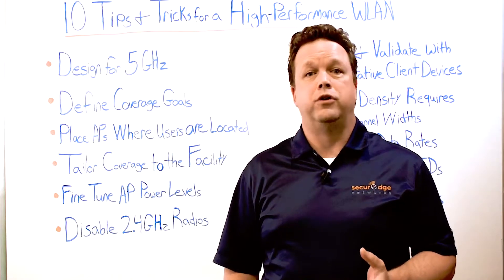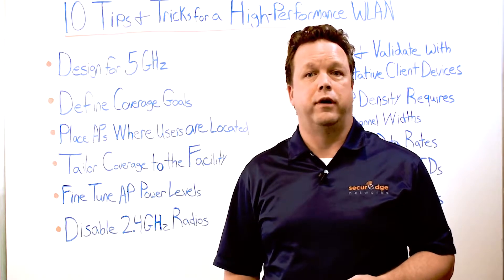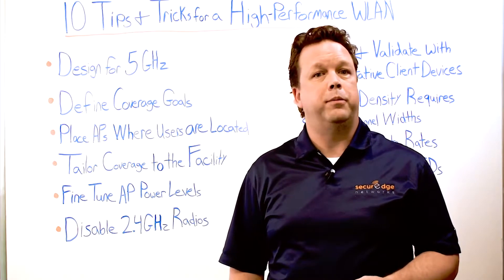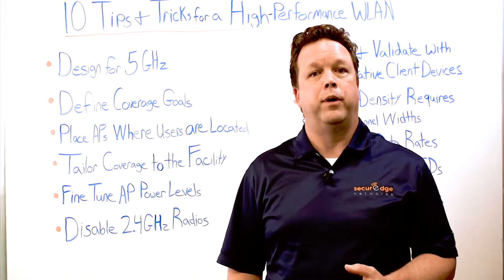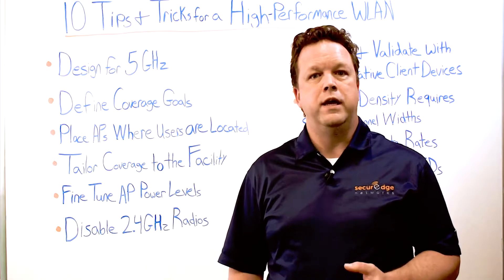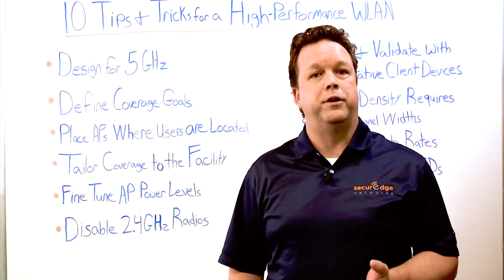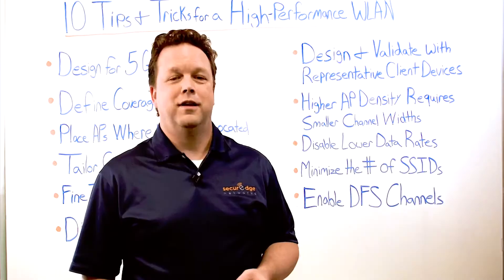We also recommend disabling 2.4 GHz radios if necessary. Disabling some of the 2.4 GHz AP radios can prevent co-channel interference and still provide some additional bandwidth to the wireless LAN.